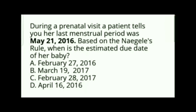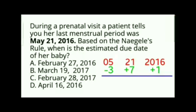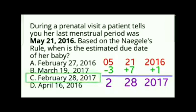Another board exam example: During a prenatal visit, a patient states her LMP was May 21, 2016. Since May is April–December range, use minus 3, plus 7, plus 1. May is month 5: 5 minus 3 is 2 (February), 21 plus 7 is 28, 2016 plus 1 is 2017. The estimated due date is February 28, 2017. The correct answer is letter C.